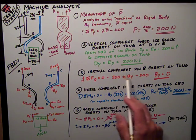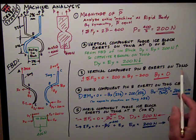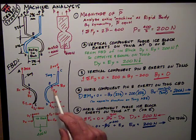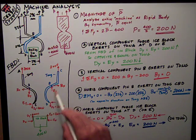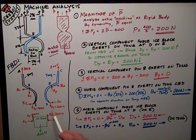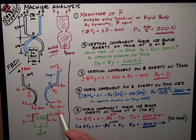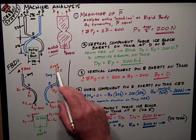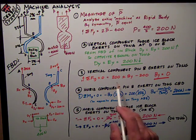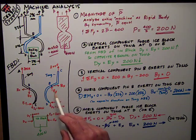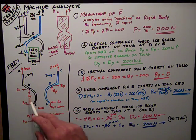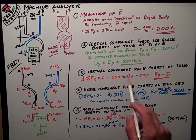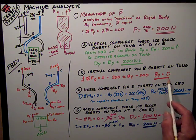Number three, the vertical component the pin B exerts on the tong. So look at it either way, look at this tong CBD. I've got 200 newtons down from D, that dy, 200 newtons up, the force P, so 200 plus or minus By. I've assumed it up on one and down on the other, doesn't make any difference because 200 minus 200 is zero, so therefore By has got to be equal to zero.